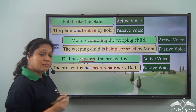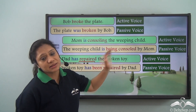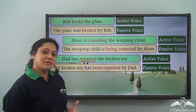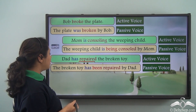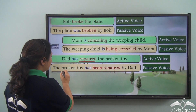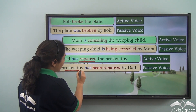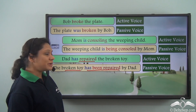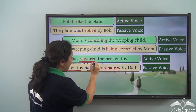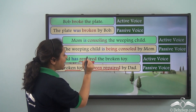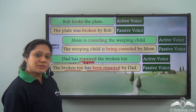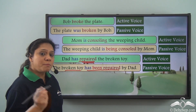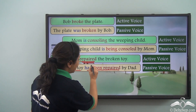In 'Dad has repaired the broken toy,' this is in the active voice with one past participle: 'repaired.' In the passive voice this becomes 'The broken toy has been repaired.' In the passive voice we now have two past participles. So again, the passive voice has one past participle more than the active voice.